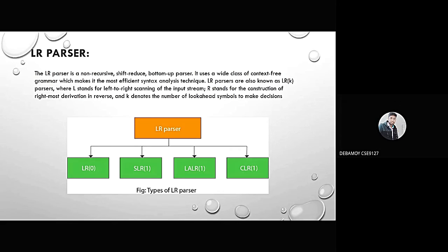There are four types of LR parsers. The first is LR(0), the second is SLR(1), the third is LALR(1), and the fourth is CLR(1).